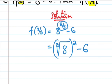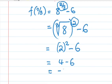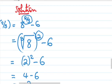This can be written as 8 to the power 2 over 3 minus 6. That's the meaning of fraction index. This equals the cube root of 8 to the power 2 minus 6. The cube root of 8 is 2, so 2 to the power 2 is 4, minus 6 equals negative 2.